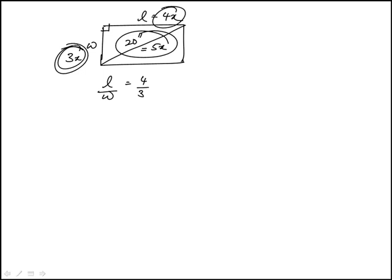This is the 3, 4, 5 triangle, which means x is 4, because 5x is 20.